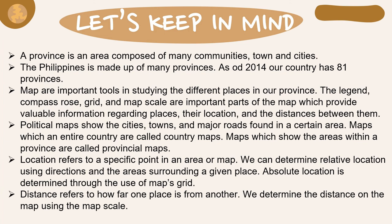Political maps show the cities, towns, and major roads found in a certain area. Maps which cover an entire country are called country maps. Maps which show areas within a province are called provincial maps. Location refers to a specific point in an area or map. We can determine relative location using directions and the areas surrounding a given place. Absolute location is determined through the use of a map's grid. Distance refers to how far one place is from another, and it is determined using the map scale.